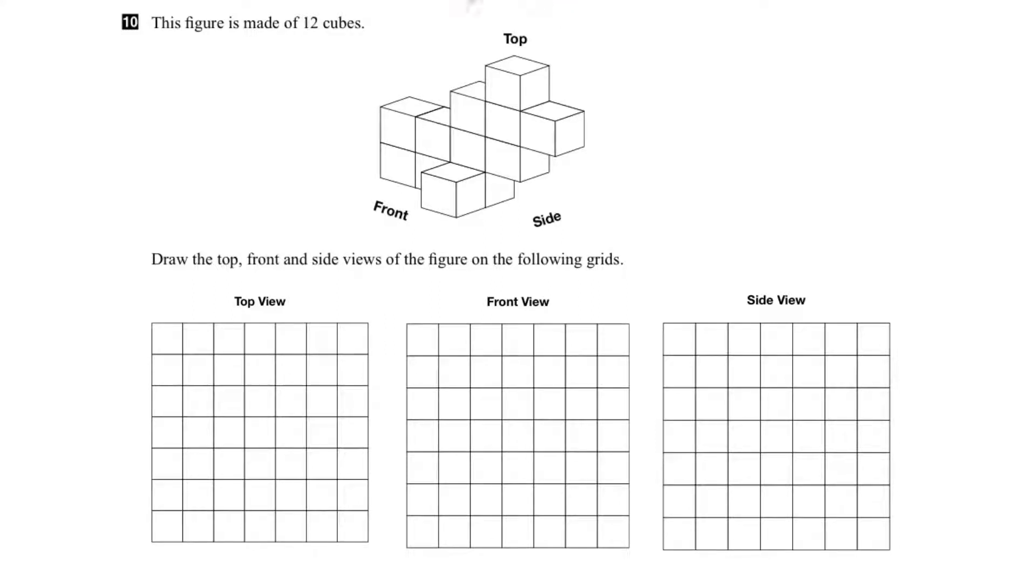In question 10, we're given a three-dimensional figure that's made up of 12 cubes. And we have to determine what the top, front, and side views would look like in two dimensions.